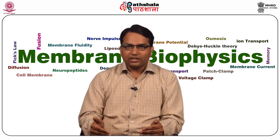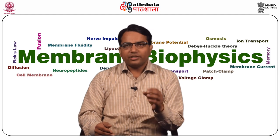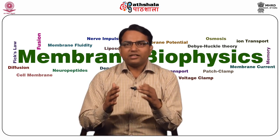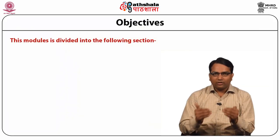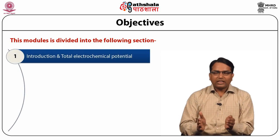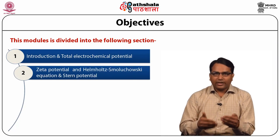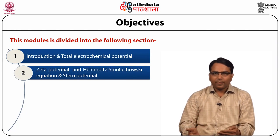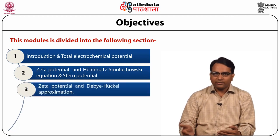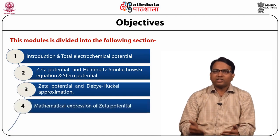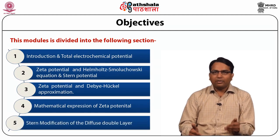There are other potentials also related to the membrane, including Zeta potential and Stern potential. In this module we have discussed different potentials related to the membrane. This module is divided into different sections: introduction, total electrochemical gradient, Zeta potential and its Helmholtz equation, Stern potential, the relation between Zeta potential and Debye-Hückel approximation, mathematical expression of Zeta potential, and finally the Stern modification of the diffuse double layer.